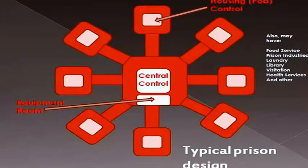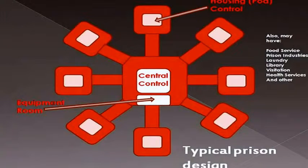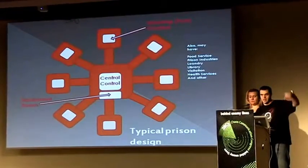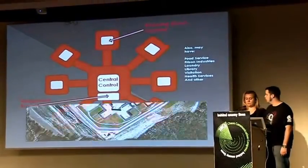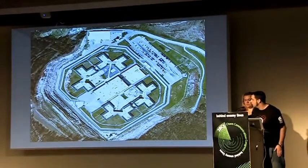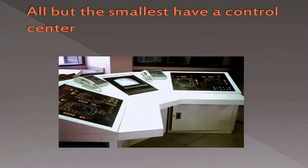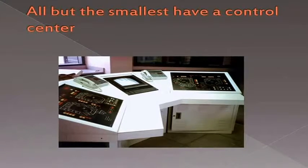This is typically how prisons are laid out — a hub and spoke design where central control is in the middle and all the housing units spawn off of that. In central control, the equipment room where the PLCs and servers are is usually attached to central control. In the facility we went to, it was actually underneath it — you had to go down a hatch through the floor to get down to the rack room. There could be hundreds of cells.